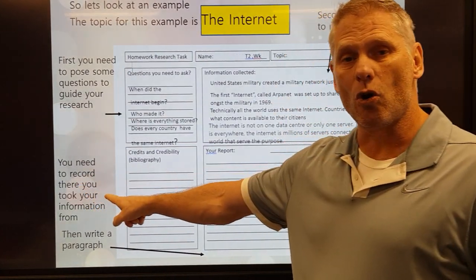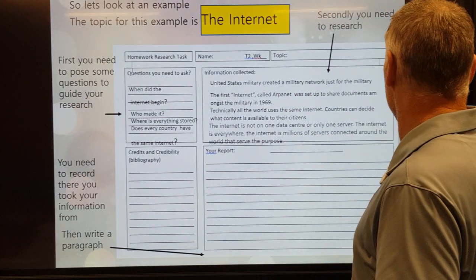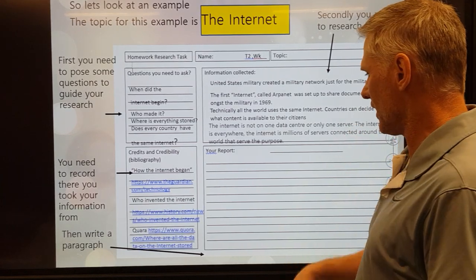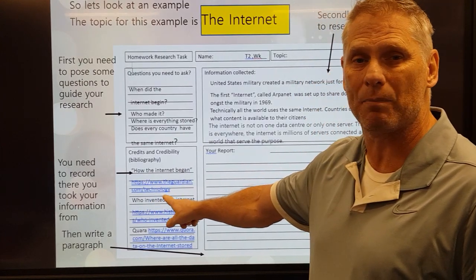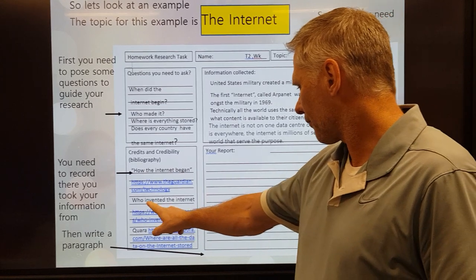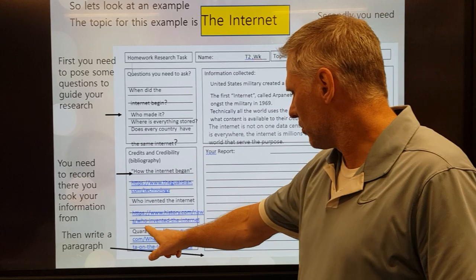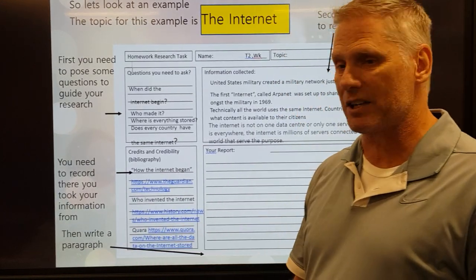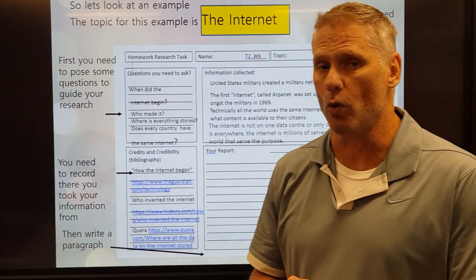You also need to record where you took the information from. I visited three websites — you can see I've put the title 'How the Internet Began' and the main part of the URL. The next one was 'Who Invented the Internet,' and then I went to a Quora site and found some information there. After all that, I need to write it into my own words in a paragraph.